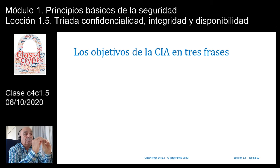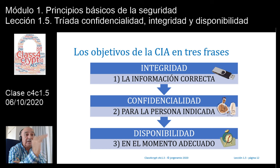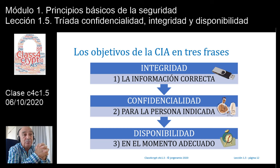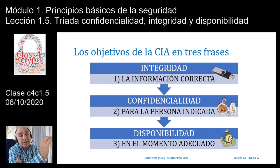Vayamos a hacer un resumen muy escueto de los objetivos de esta famosa tríada, de confidencialidad, integridad y disponibilidad, en tres fases bastante claras. Integridad, confidencialidad y disponibilidad sería lo mismo que decir: la información correcta para la persona indicada en el momento adecuado. Es decir, si soy la persona indicada —el destinatario de esa información o tengo posibilidad de acceder porque tiene cierto grado de confidencialidad—, podría acceder en el momento que desee. Y además, la información va a ser totalmente correcta, no va a estar modificada por nadie que no sean los entes o procesos autorizados.